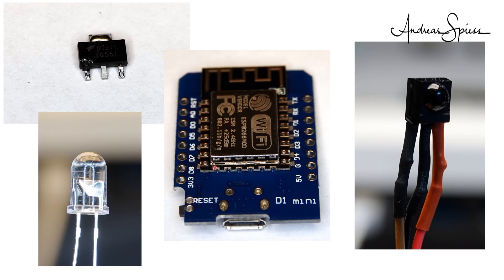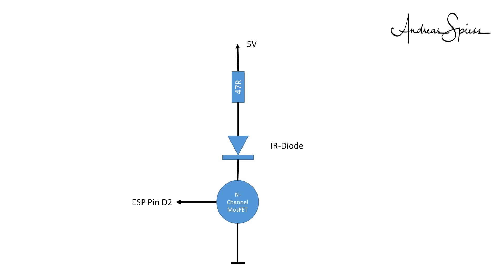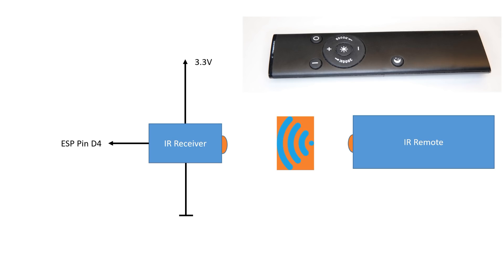Because IR diodes need more current than an ESP8266 can source, we use a small n-channel MOSFET. This part is used as a switch for the higher currents. I connect the LED to 5V — like that, it bypasses the 3.3V regulator.